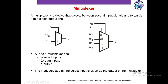If we set S equals to 0, the output F is equal to W0. If we set S equals to 1, the output F becomes equal to W1. On the right side we can see a higher-order multiplexer with 4 data inputs W0 to W3 and two select inputs S1 and S0.